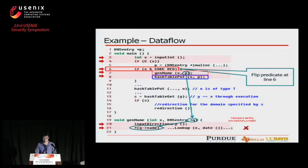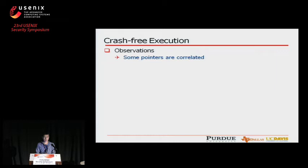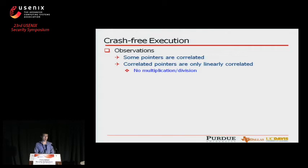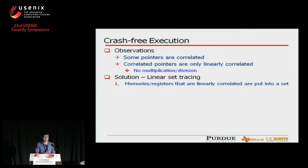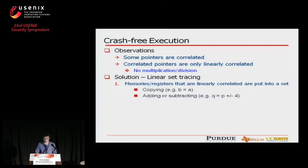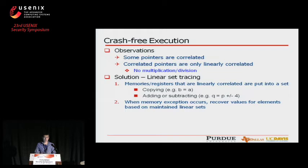Based on our observations: first, some pointers are correlated — for example, P, Q, and q->name. Second, correlated pointers are only linearly correlated, meaning it is meaningless to do multiplication or division on a pointer value. Based on these two points, we devised a solution called linear set tracing. We maintain sets for all memories and registers, and if they are linearly correlated — meaning one is copied, added, or subtracted from another — we put them into the same set. When a memory exception occurs, we recover values for all elements based on the maintained linear set.